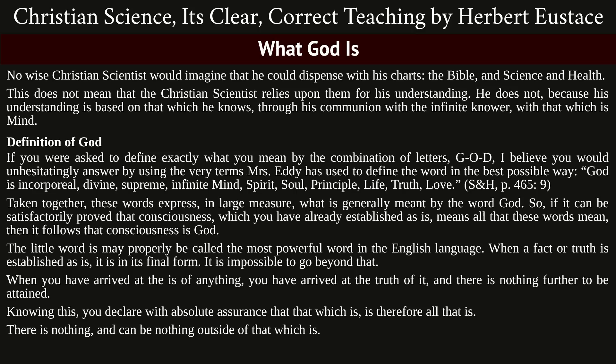Taken together, these words express in large measure what is generally meant by the word God. So, if it can be satisfactorily proved that consciousness, which you have already established as is, means all that these words mean, then it follows that consciousness is God. The little word 'is' may properly be called the most powerful word in the English language. When a fact or truth is established as is, it is in its final form. It is impossible to go beyond that. When you have arrived at the 'is' of anything, you have arrived at the truth of it, and there is nothing further to be attained.